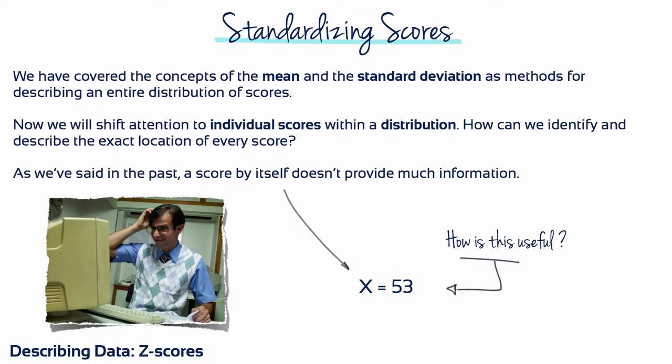Without any frame of reference, a simple raw score provides relatively little information. To make raw scores more meaningful, they're often transformed into new values that contain more information.